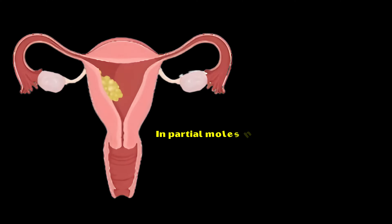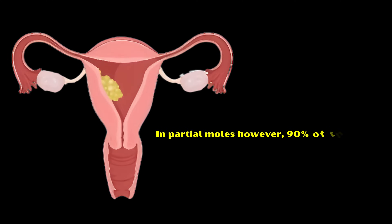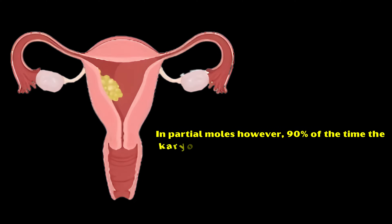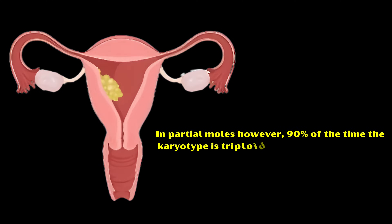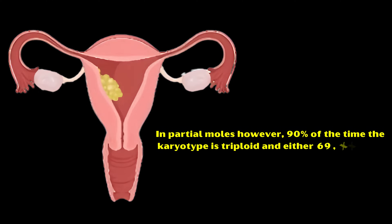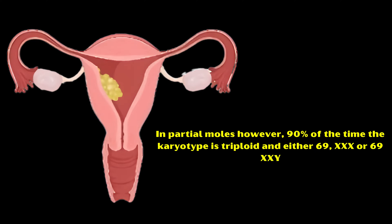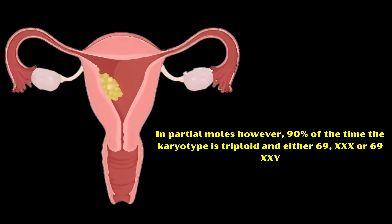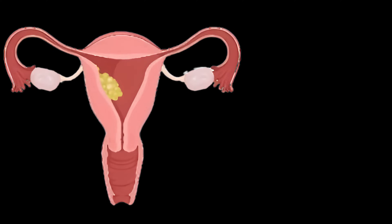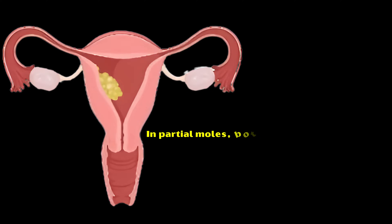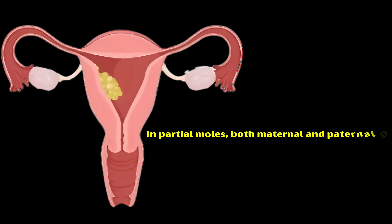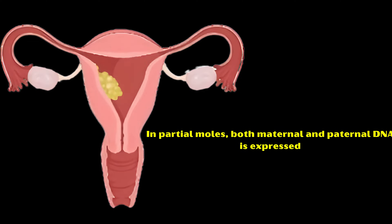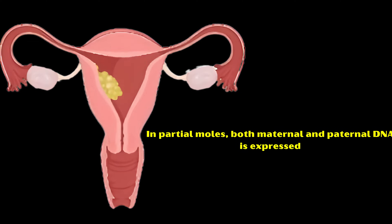In partial moles, 90% of the time the karyotype is triploid and either 69XXX or 69XXY. In partial moles, both maternal and paternal DNA is expressed.